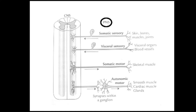The types of nerve fibers in the spinal nerves: somatic sensory fibers supply the skin, bones, muscles, and joints. Visceral sensory fibers supply the visceral organs and blood vessels. Somatic motor fibers support the skeletal muscles. Autonomic motor or visceral motor fibers supply the smooth muscle, cardiac muscle, and glands.